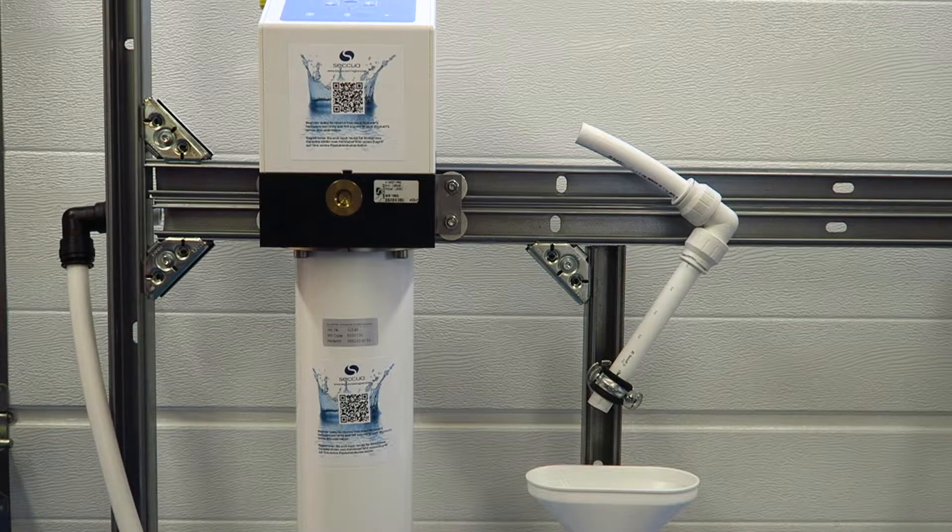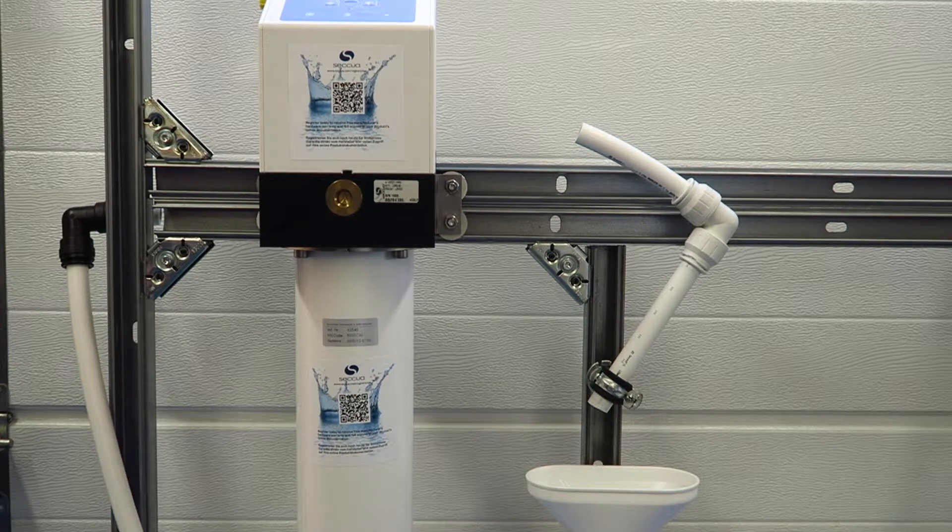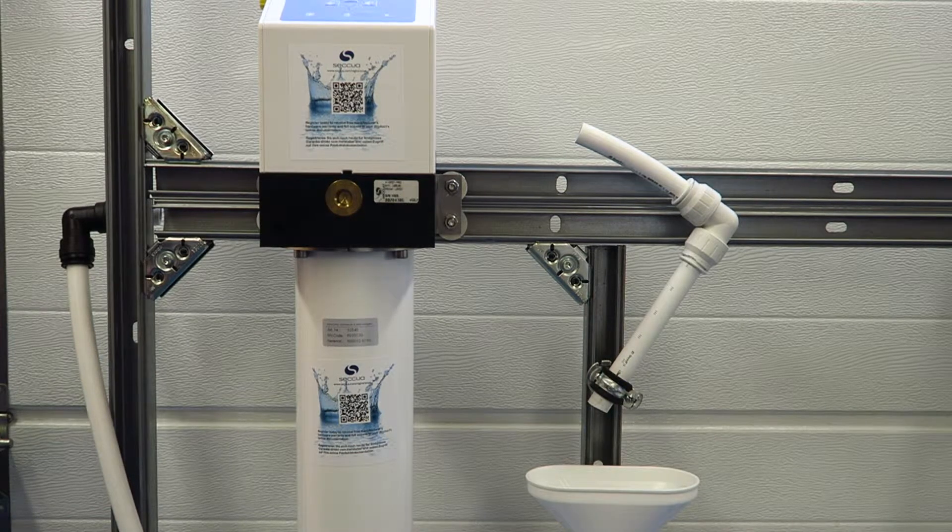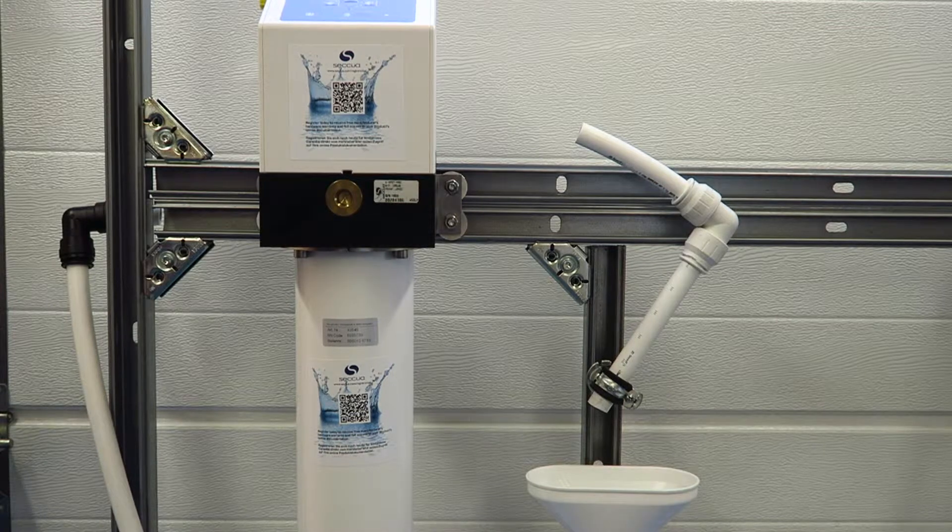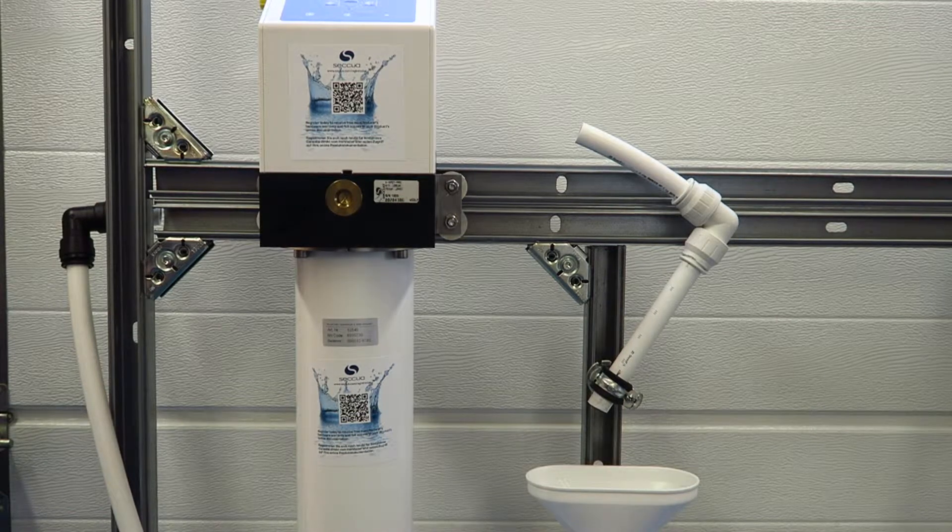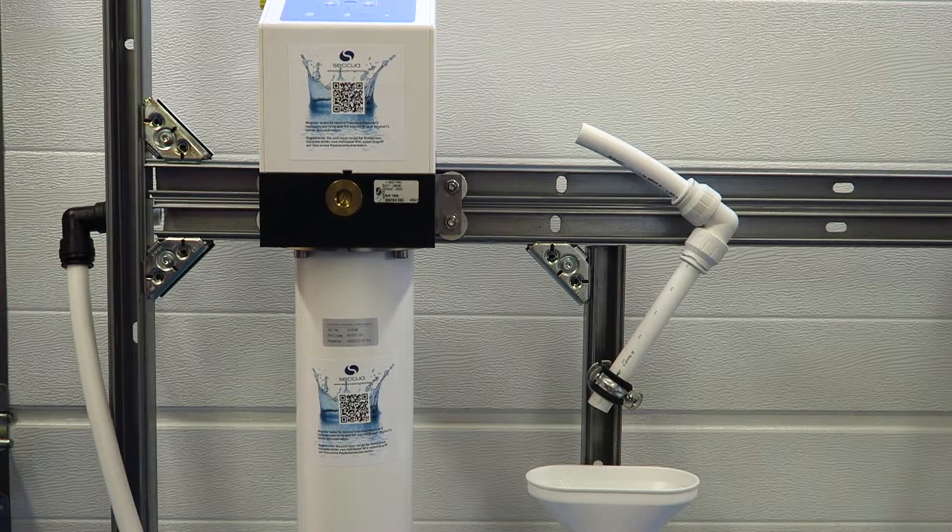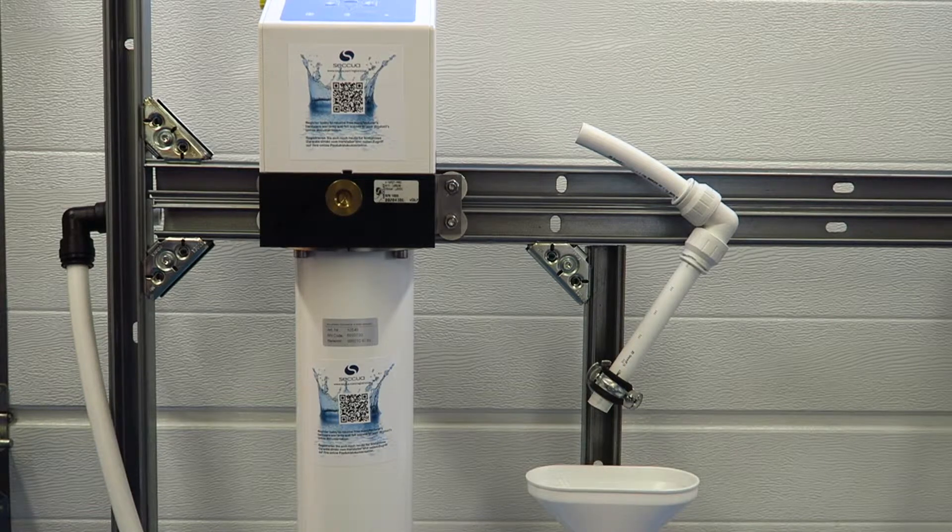Ensure that you have a 100 micron pre-filter installed in the feed line. Depending on your installation, you may need a pressure reducer in the feed line, as the max operating pressure of the Yule Spring is 5 bar or 72 psi.